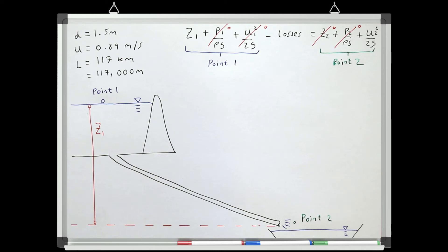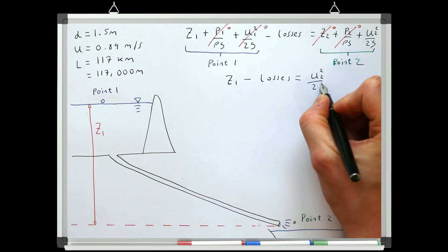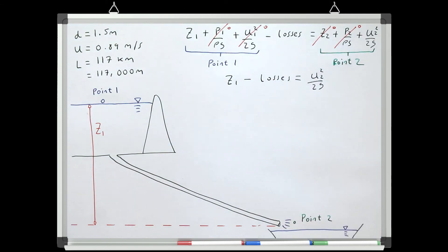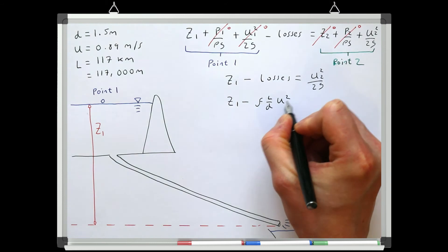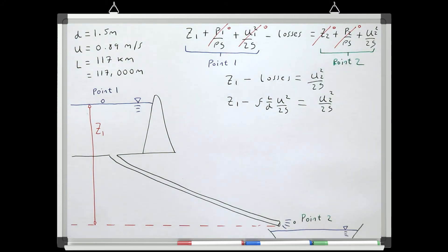So we end up with the elevation at 0.1 minus the total losses in the system equals the velocity head at 0.2. Because the pipe in this system is so long, continuous losses are likely to be massive compared to local losses. So we can actually neglect local losses in this system and just focus on continuous losses. So we can see that our velocity head at 0.2 is going to be equal to our elevation at 0.1 minus continuous losses.